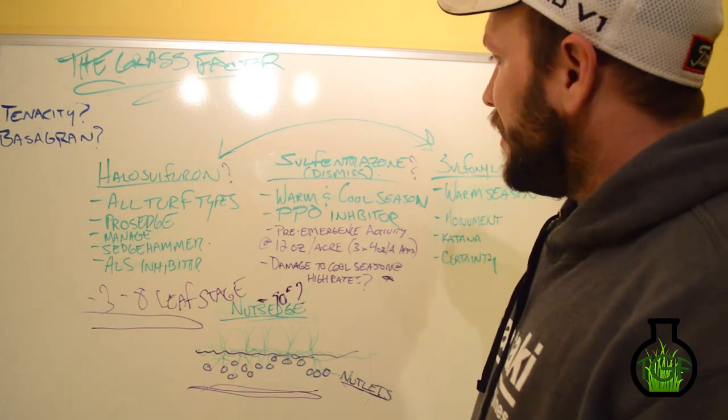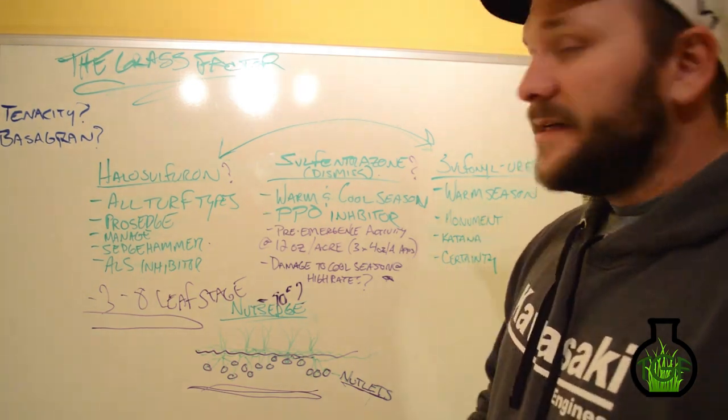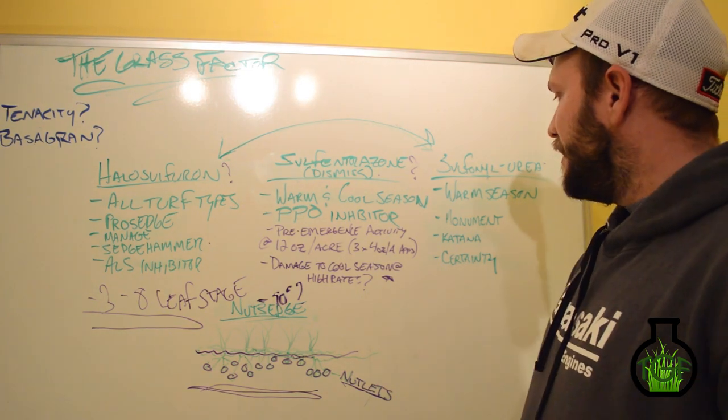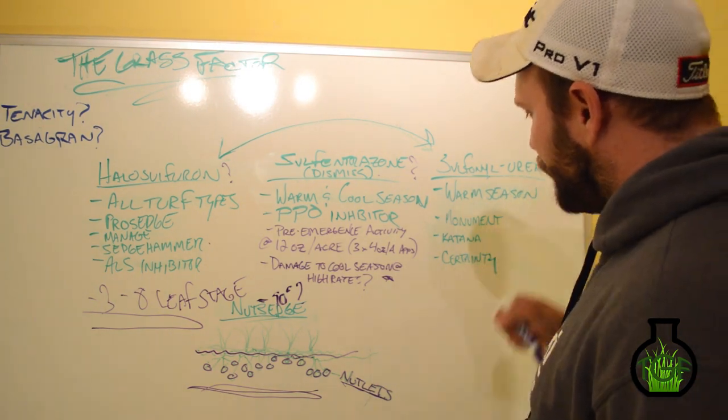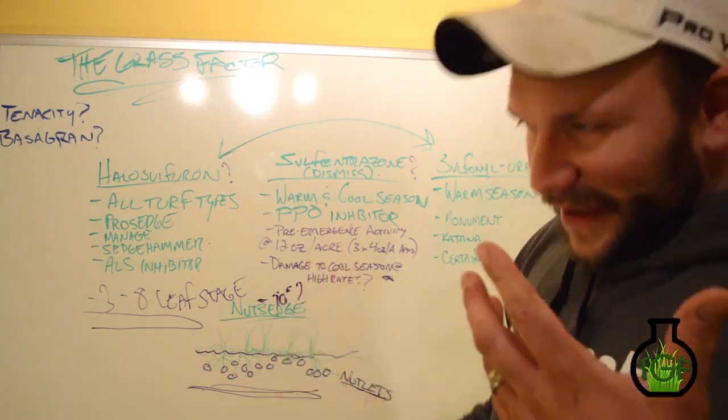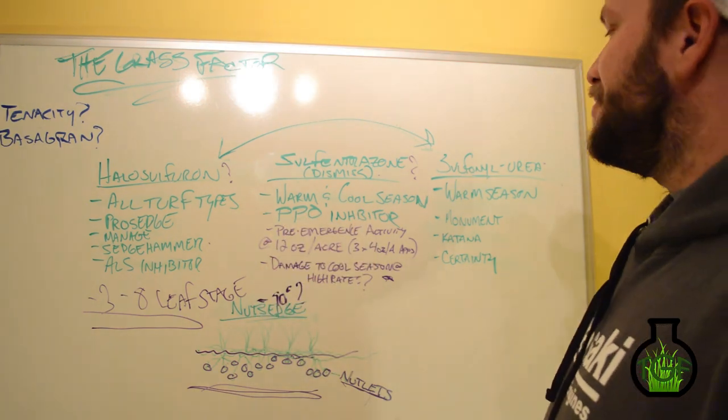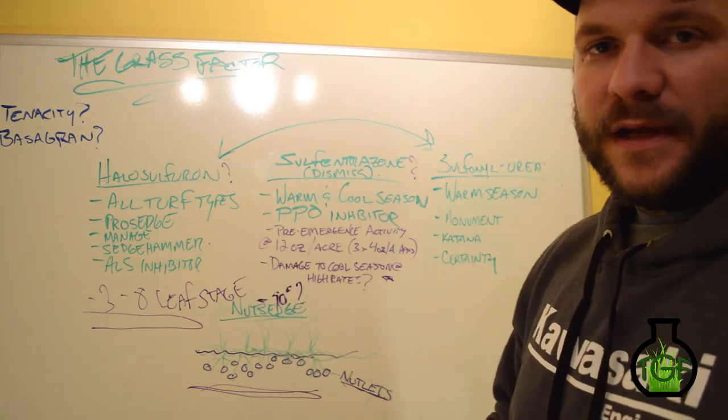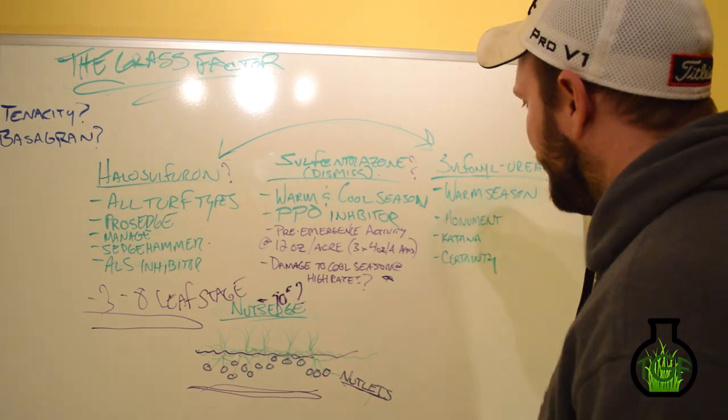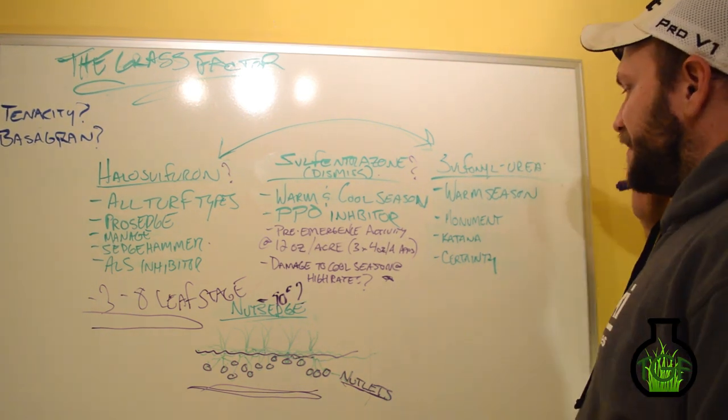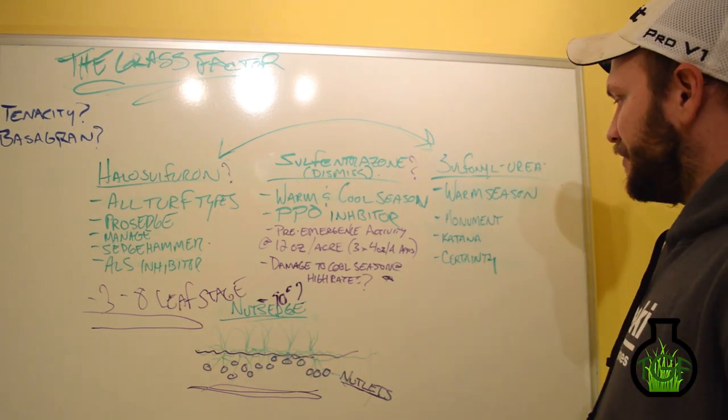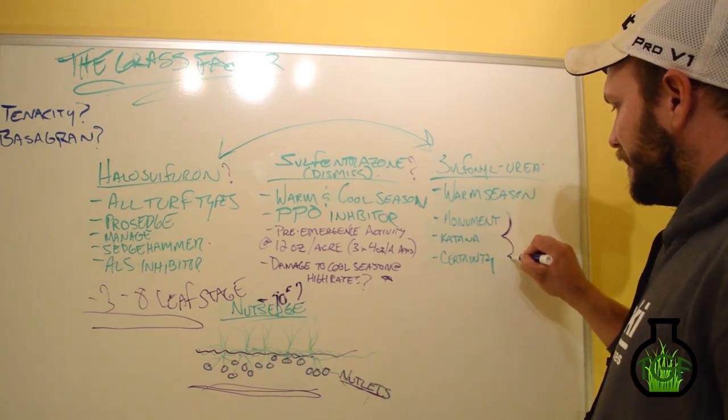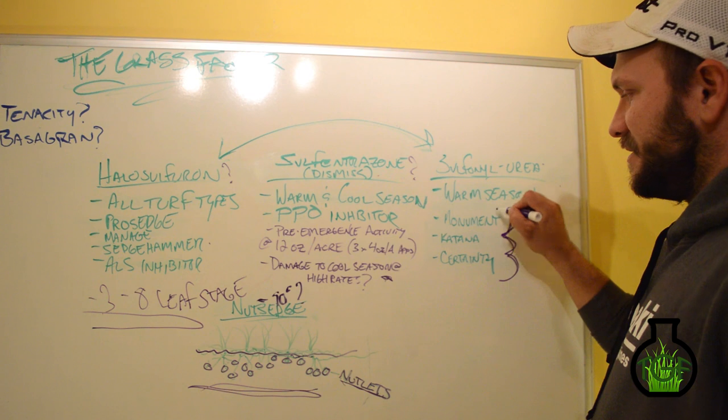Alright. So let's move on in lastly to our warm season turf type. So this is going to be Bermuda, Zoysia, primarily Centipede and St. Augustine. Be sure and check your labels. I don't know enough about these products on Centipede and St. Augustine to be able to recommend them. However, when it comes to the ultimate sedge control in warm season grasses, these three products right here are as good as it gets.